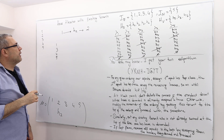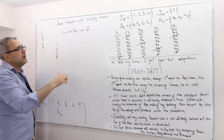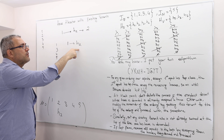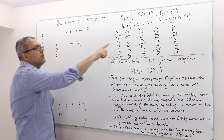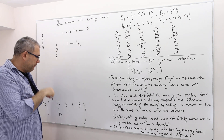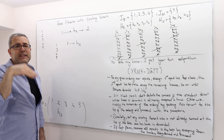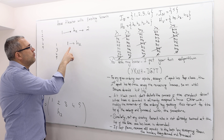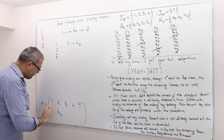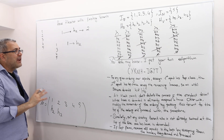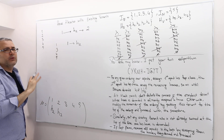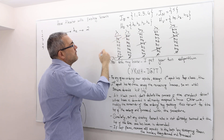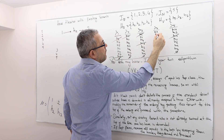We ask agent 1 again: which house do you prefer the most? He says house 2. Is house 2 now available? It was previously an occupied house, but because agent 2 is now matched with house 7, house 2 became vacant. So we give house 2 to agent 1. We match agent 1 with house 2 and take both agent 1 and house 2 out of consideration. The new list becomes 3, 4, 5.